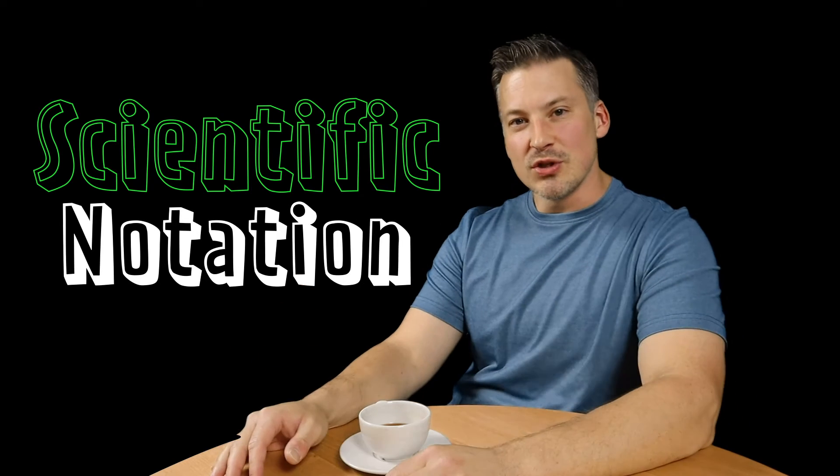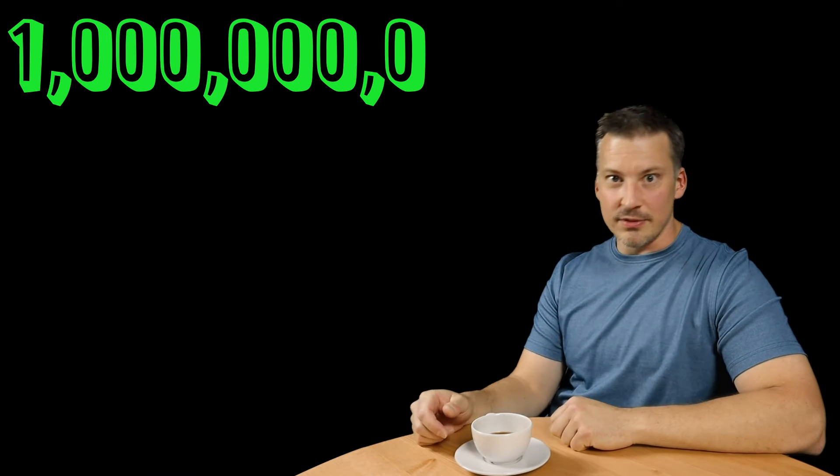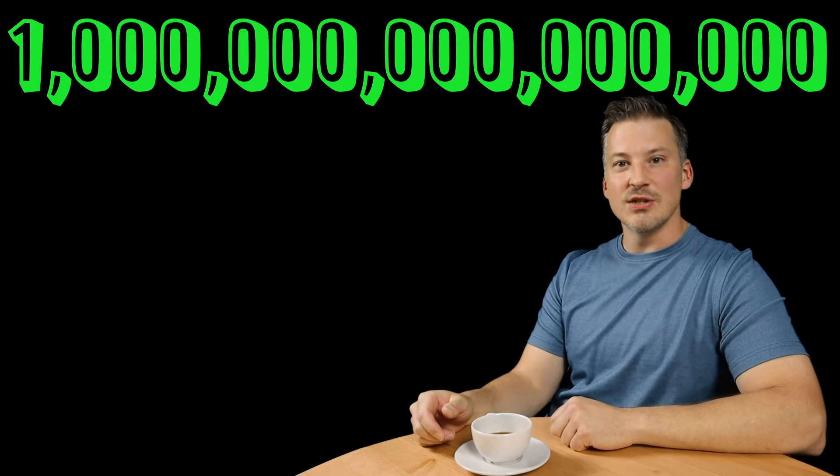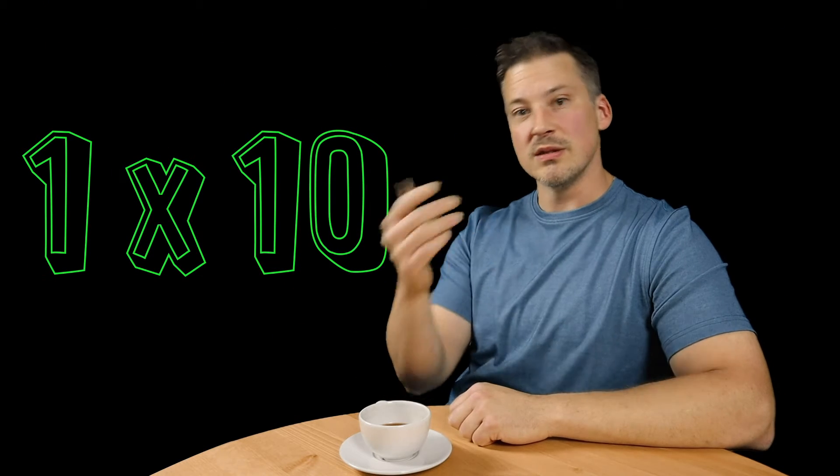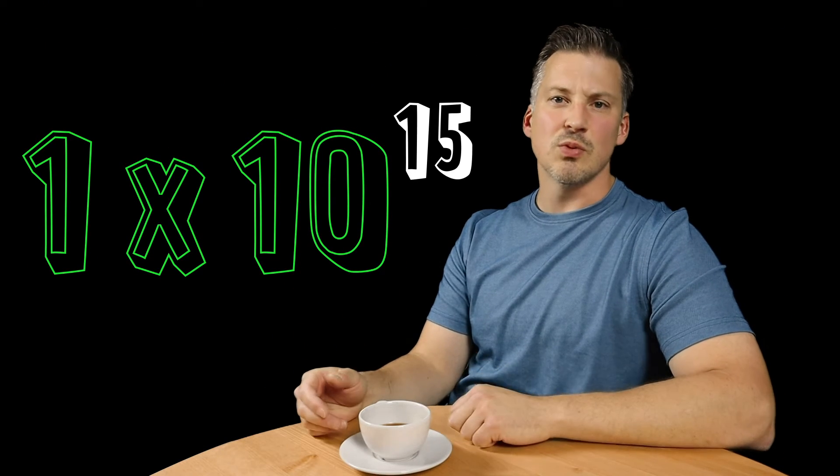Now, why is scientific notation important? Well, in science, it turns out that the numbers are generally much larger or much smaller than we're used to dealing with in everyday life. Imagine writing out one quintillion - it would be one with 15 zeros after it. Instead, we can simply write 1 times 10 raised to the 15th power. It's so much more convenient.